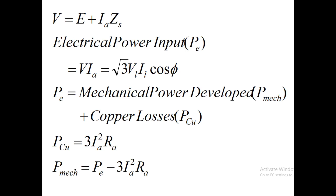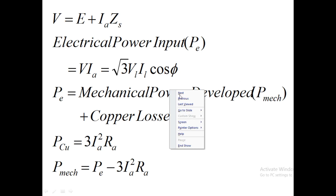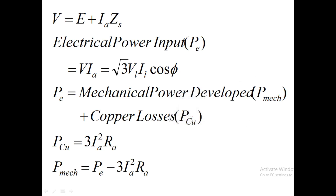We know that in a motor we are giving a voltage and a back EMF is produced. Voltage is always produced earlier. So we can write the equation like V equal to E plus Ia into Zs. That equation is very clear because in case of motors we are always using that equation.